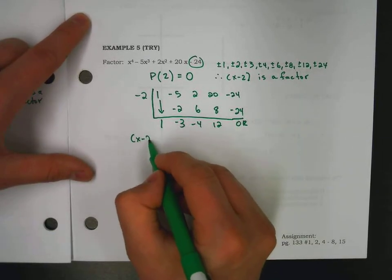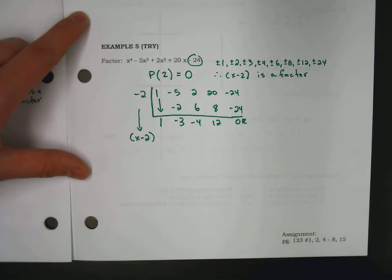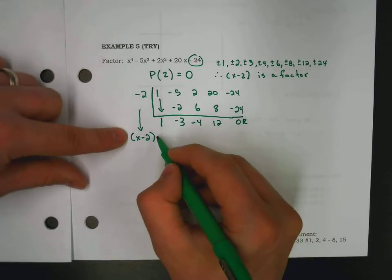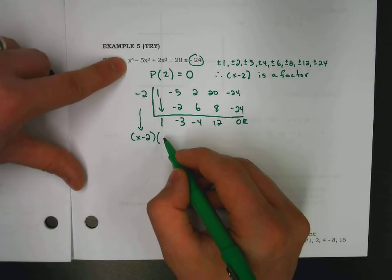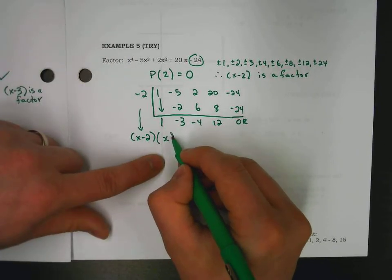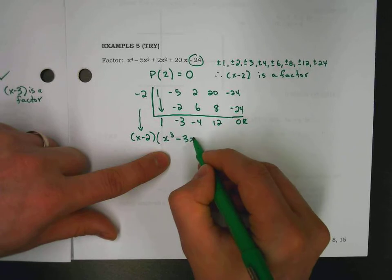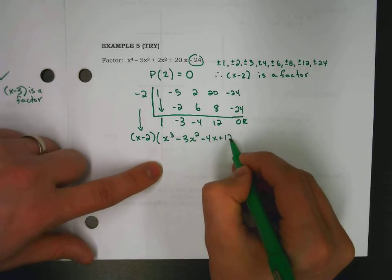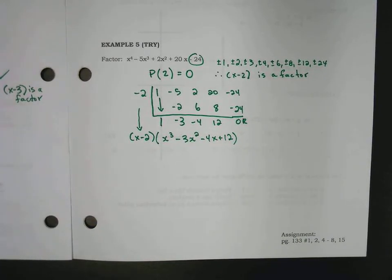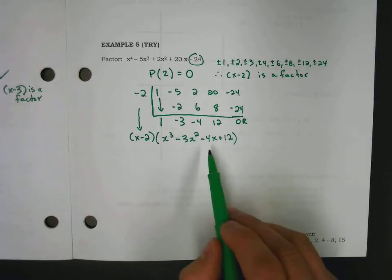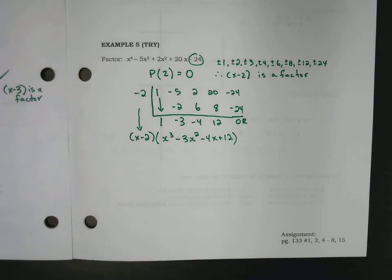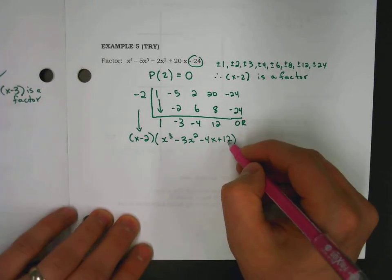And we end up with, and you should always do this as well, don't forget that number in front helps recreate your division statement. x minus 2 times, again, it was degree 4, now we're at degree 3. x cubed minus 3x squared minus 4x plus 12. The next step after this was supposed to be factor the quotient. And you're thinking, how am I supposed to factor a cubic? And then you pause and realize it's another synthetic division, another factor theorem.